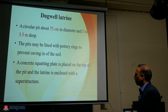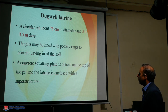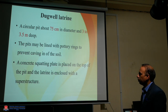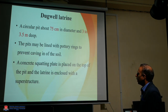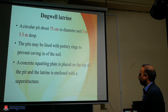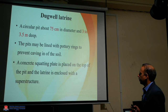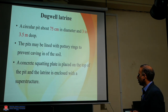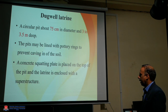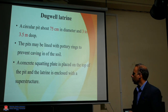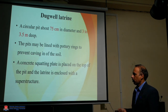The next type is the dug well latrine. It is a circular pit about 75 centimeters in diameter and 3 to 3.5 meters deep. The pit may be lined with pottery rings or concrete cement rings, available in the market, to prevent caving in of the soil. A concrete squatting plate is placed on top of the pit, and the latrine is enclosed with a superstructure.